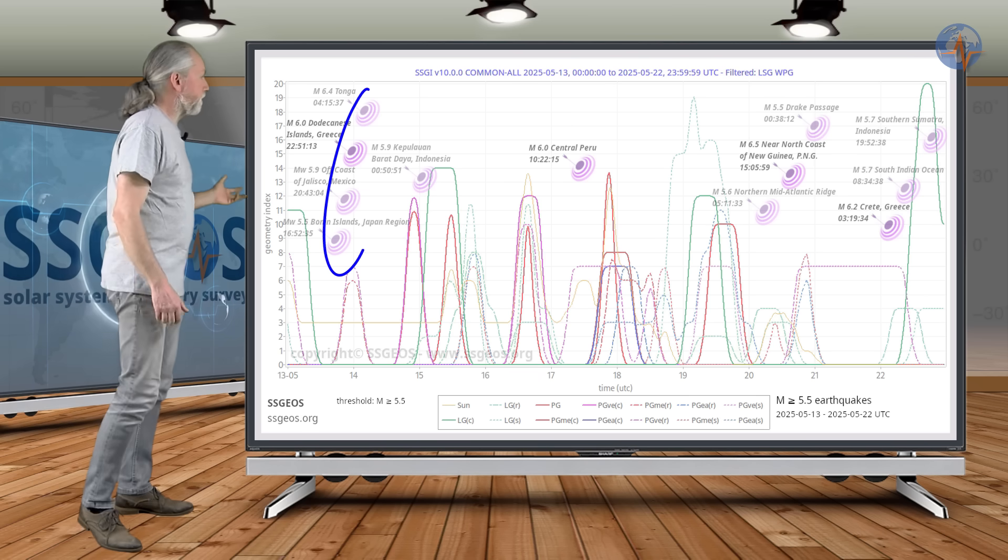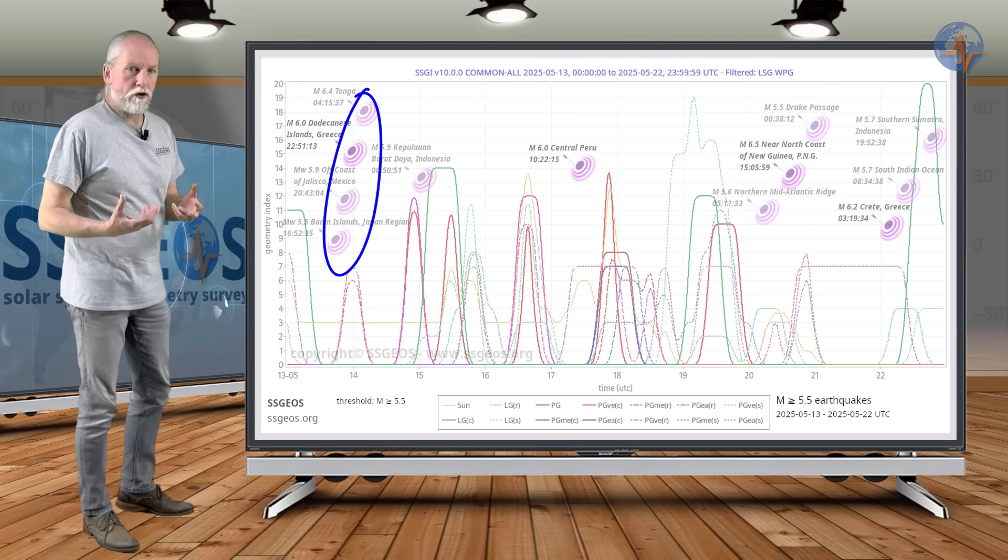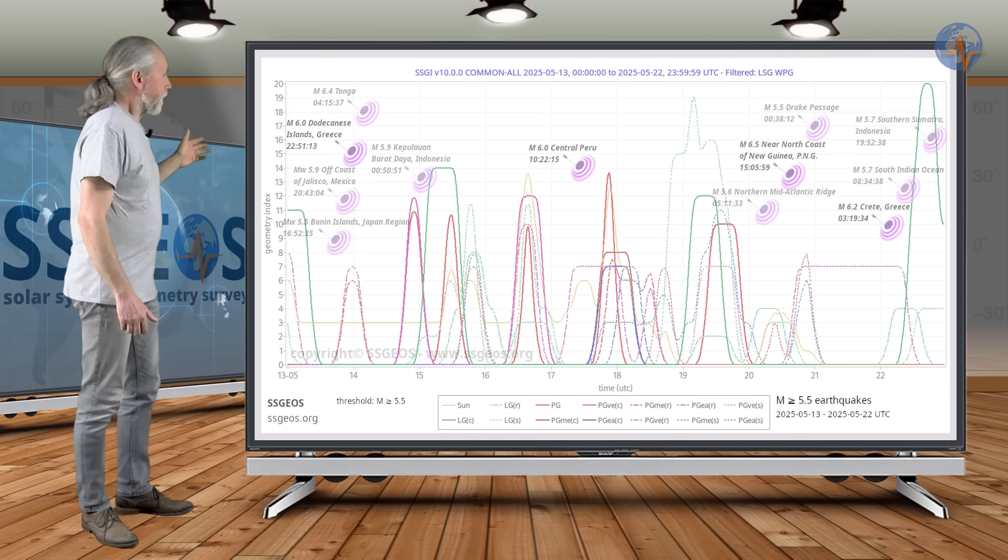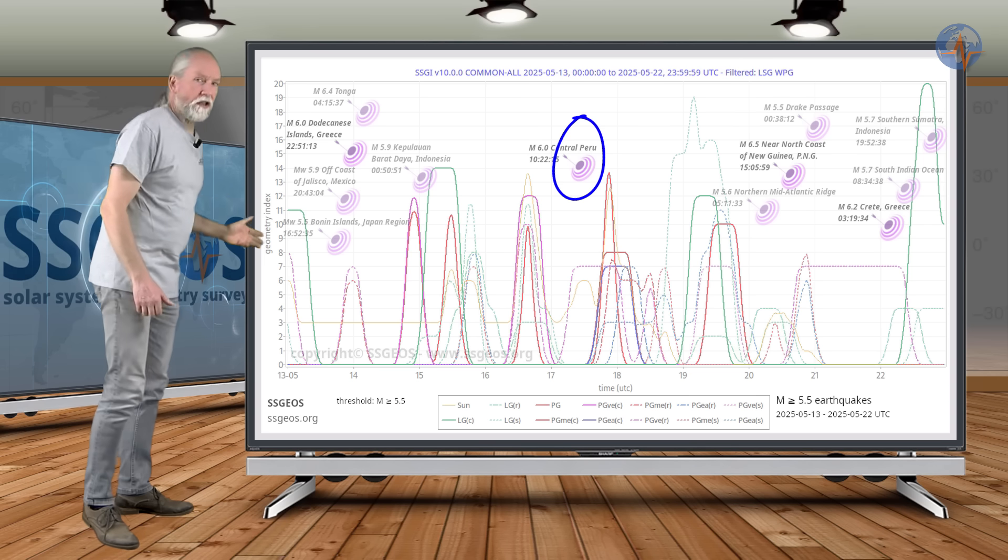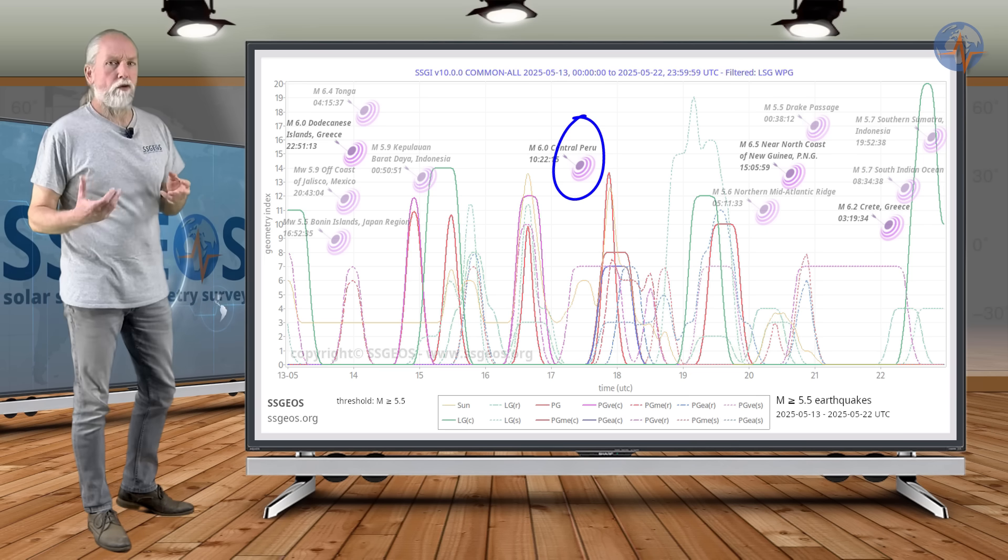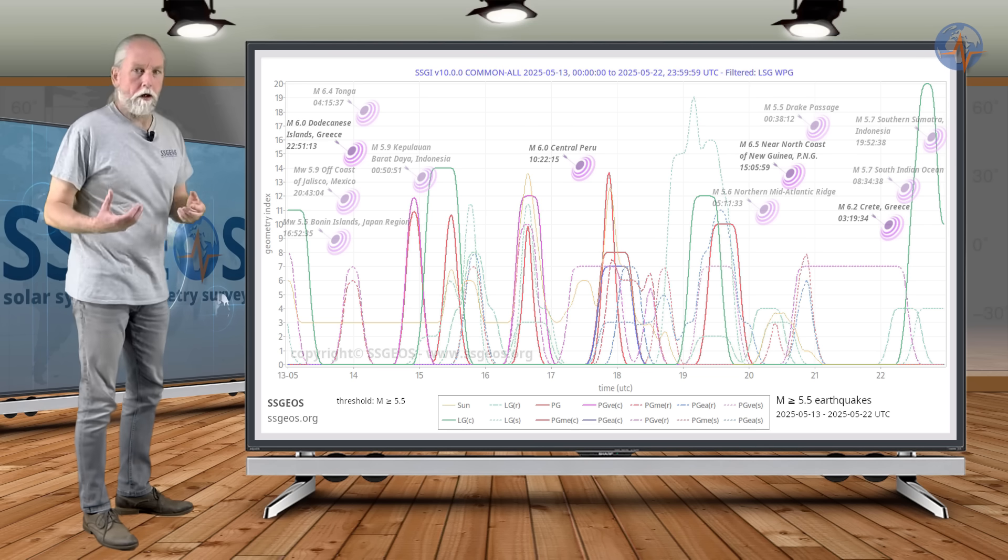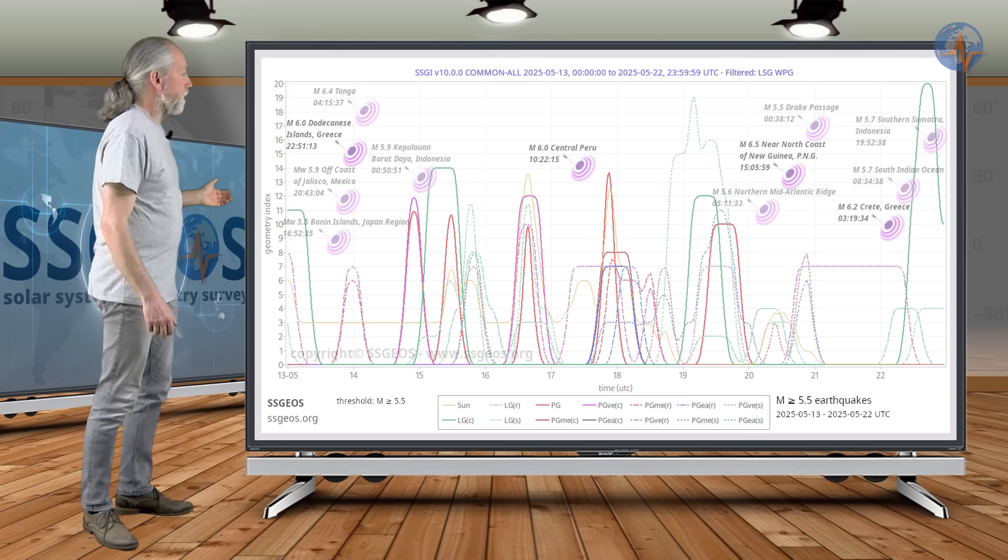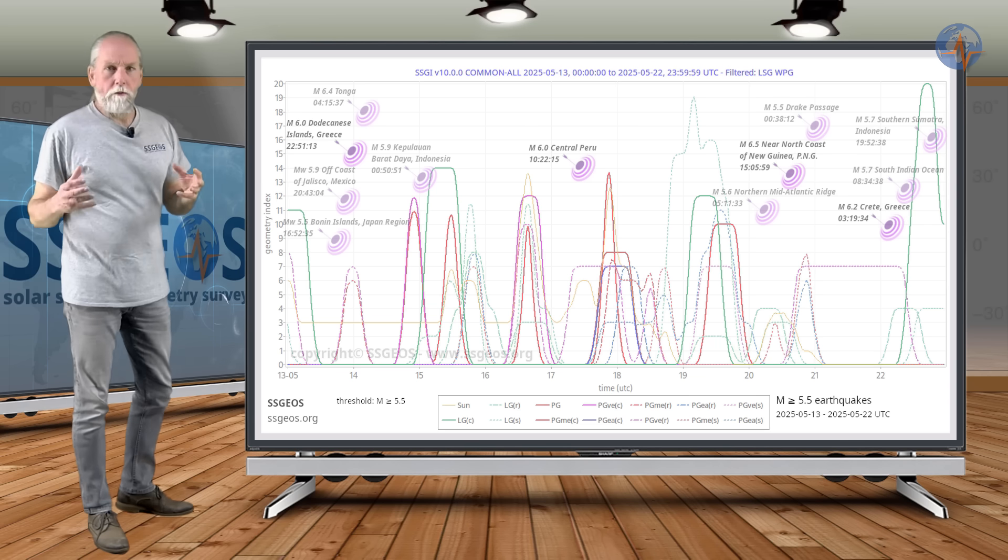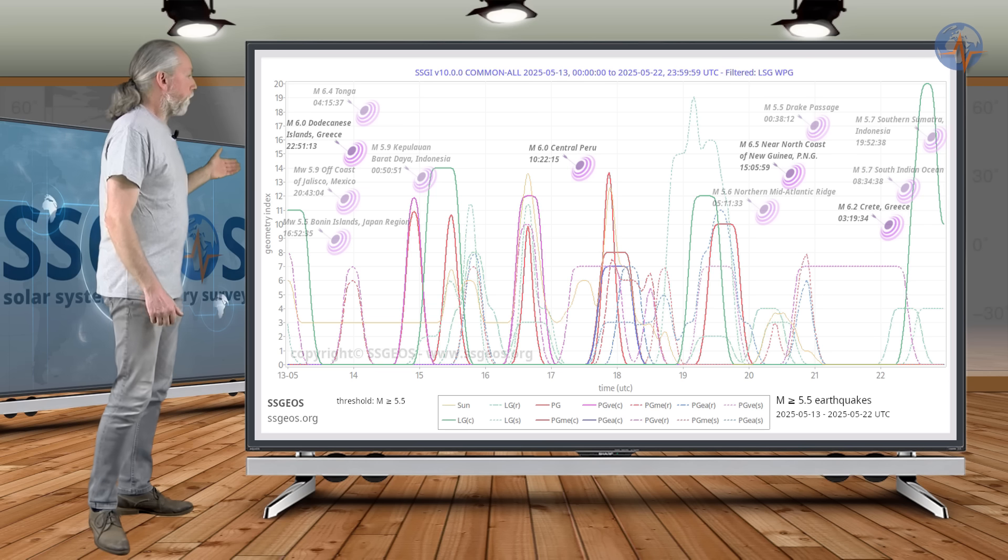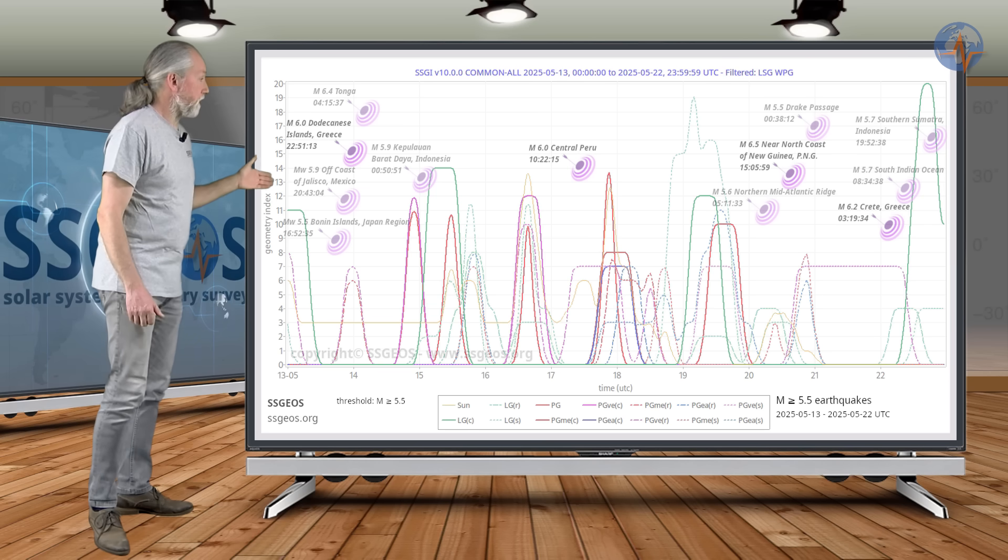It already happened on the 13th following the lunar geometry that preceded that clustering. Then we have a magnitude 6 earthquake on the 17th with very critical planetary geometry. However, the lunar peak on the 15th is also part of that seismic increase. So far no major seismic activity with the critical convergence of planetary geometry on the 15th, 16th and 17th.